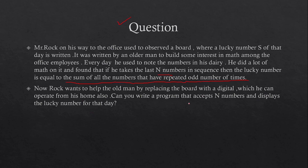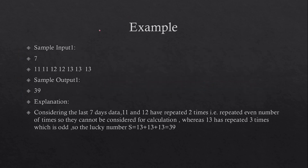This line is very important to solve this question, so try to remember it. Now Rock wants to help the old man by replacing the board with a digital one which he can operate from his home. Can you write a program that accepts N numbers and displays the lucky number for that day? So basically the key point is: the lucky number equals the sum of all numbers that have repeated an odd number of times.